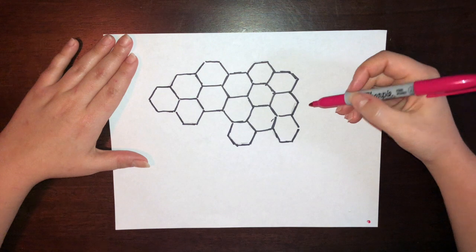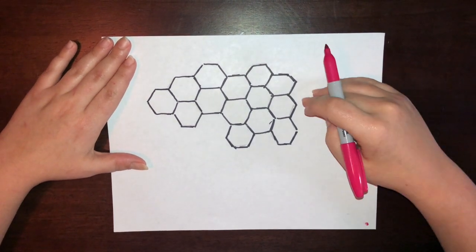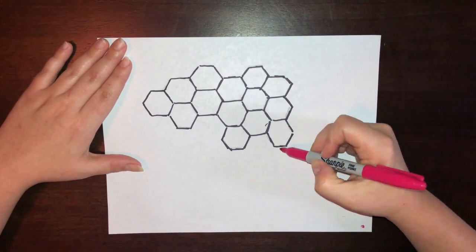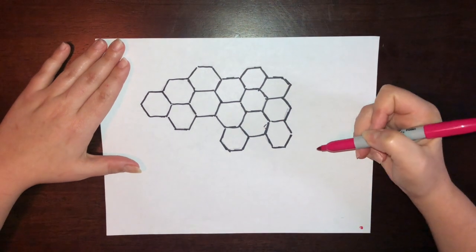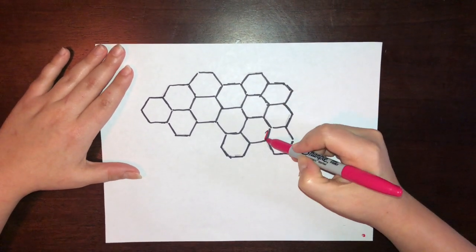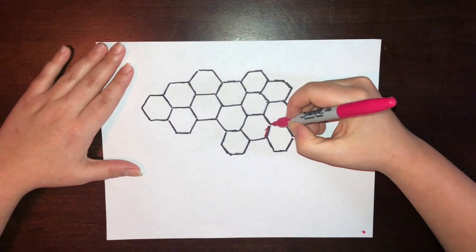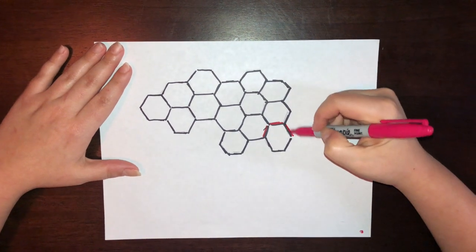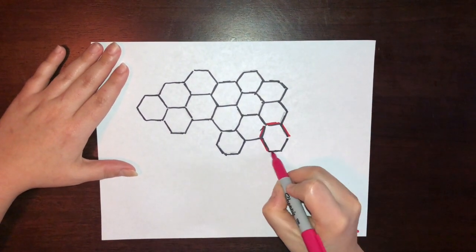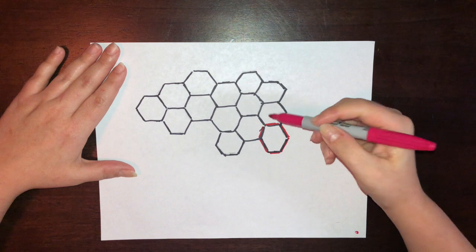So if we've got six sides here, right, then whatever side I'm using I need to duplicate over and over again. So if I'm going to be putting my hair here...